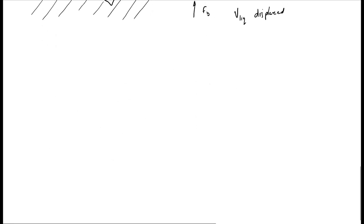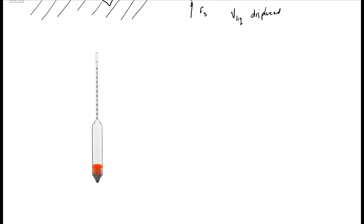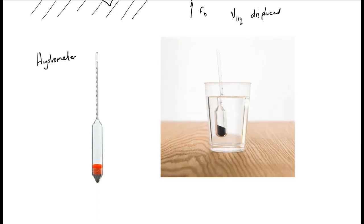So let's look at a special case of buoyancy called the hydrometer. What is a hydrometer? This is a picture of what a hydrometer looks like, and this is one being used. We use a hydrometer to calculate the density of an unknown fluid.